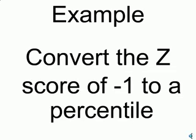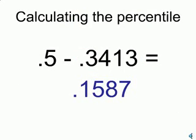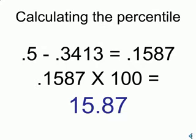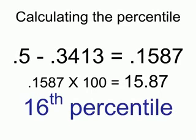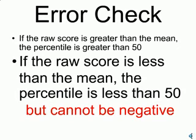Let's convert the z-score of negative 1 to a percentile. We go down to the row of 1.0, look at the column of 0.00, and then we read the proportion 0.3413. We take 0.5 and subtract 0.3413 to get 0.1587. We then multiply that by 100 to get 15.87, which rounds to the 16th percentile. That's a normal range IQ.